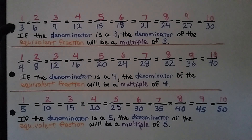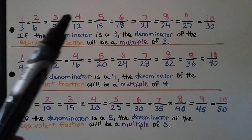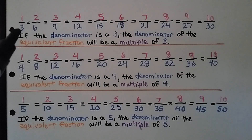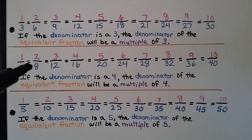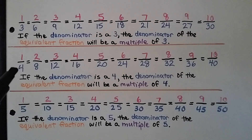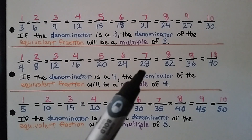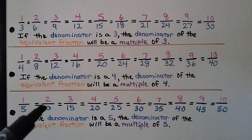Here we have one-third. If the denominator is three, the denominator of the equivalent fraction will be a multiple of three. The numerators go up by one — one, two, three, four, five, six, seven, eight, nine, ten — and the denominators skip count by threes: three, six, nine, twelve, fifteen. Those are all multiples of three. Here we have one-fourth. If the denominator is four, the denominator of the equivalent fraction will be a multiple of four. The numerators go up by one and the denominators skip count by fours — they're multiples of four. If the denominator is five, the denominators of equivalent fractions will be multiples of five.